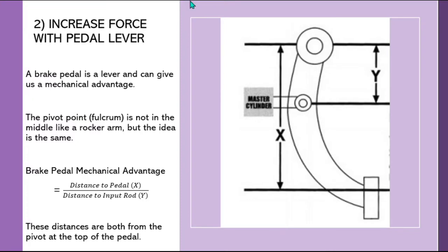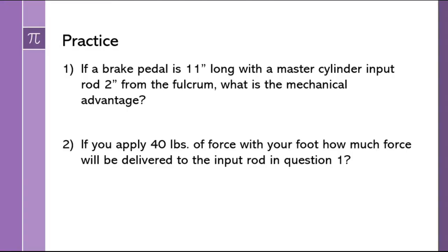Looking at the brake pedal: your foot goes here, the pedal is attached at a pivot point (also called the fulcrum) up top, and partway down there's the input rod going to the master cylinder through the firewall into the engine compartment. The two measurements you need are X — the distance between the pivot and the pedal — and Y — the distance between the pivot and the input rod. Dividing X by Y gives you the mechanical advantage of the brake pedal.